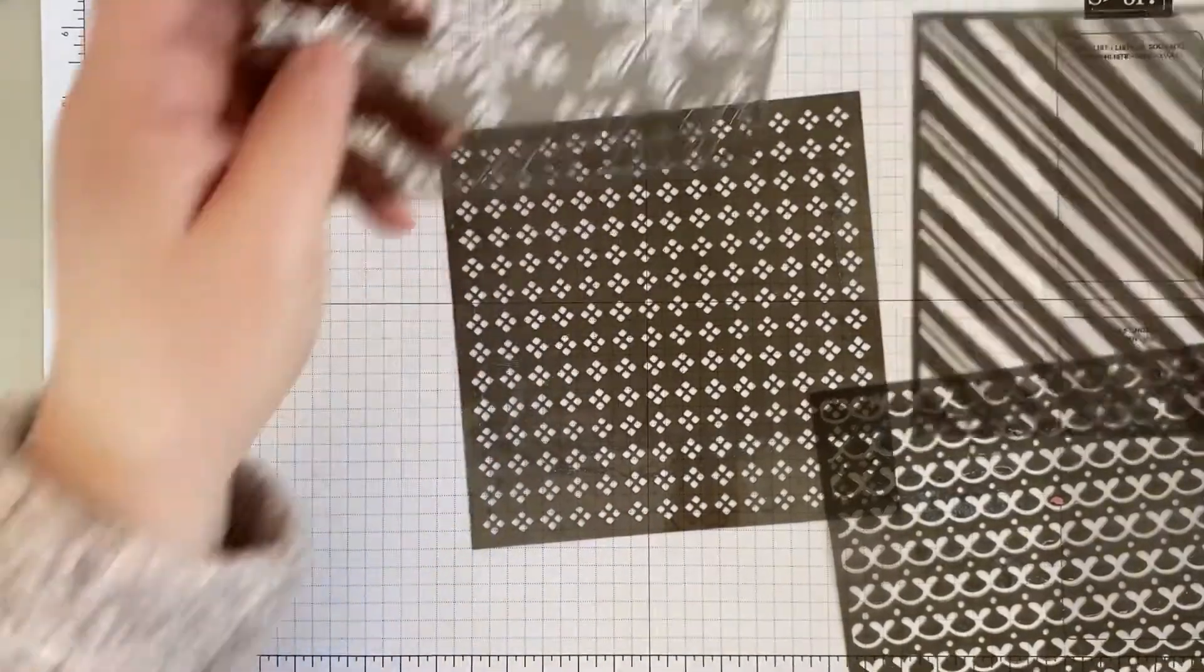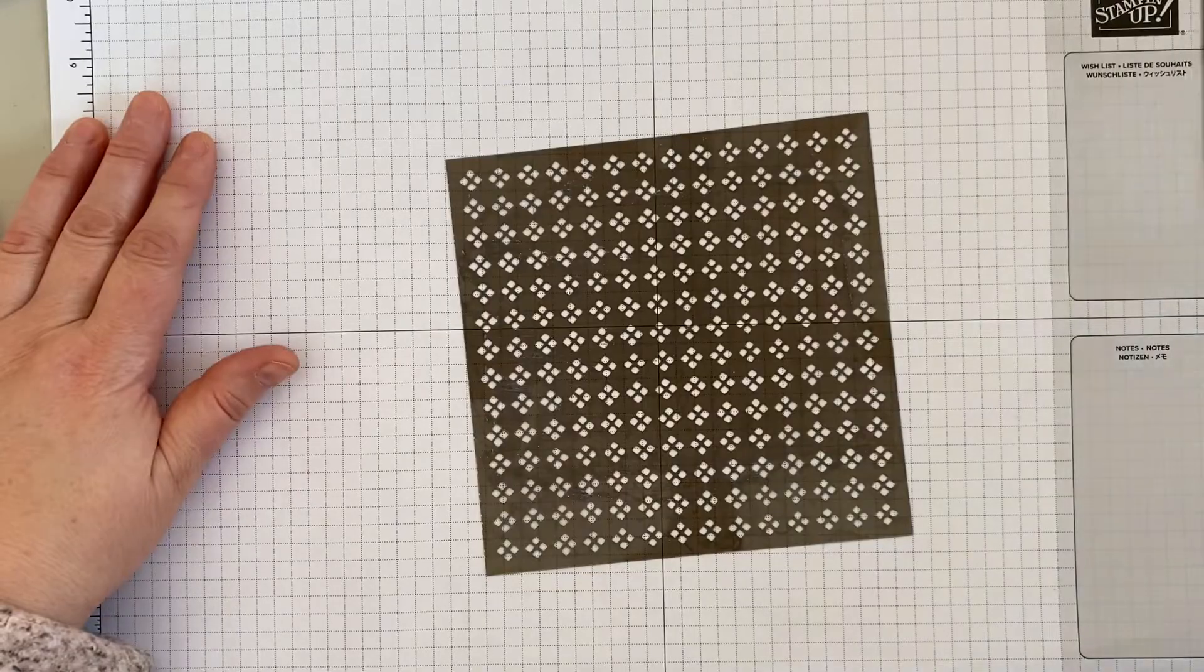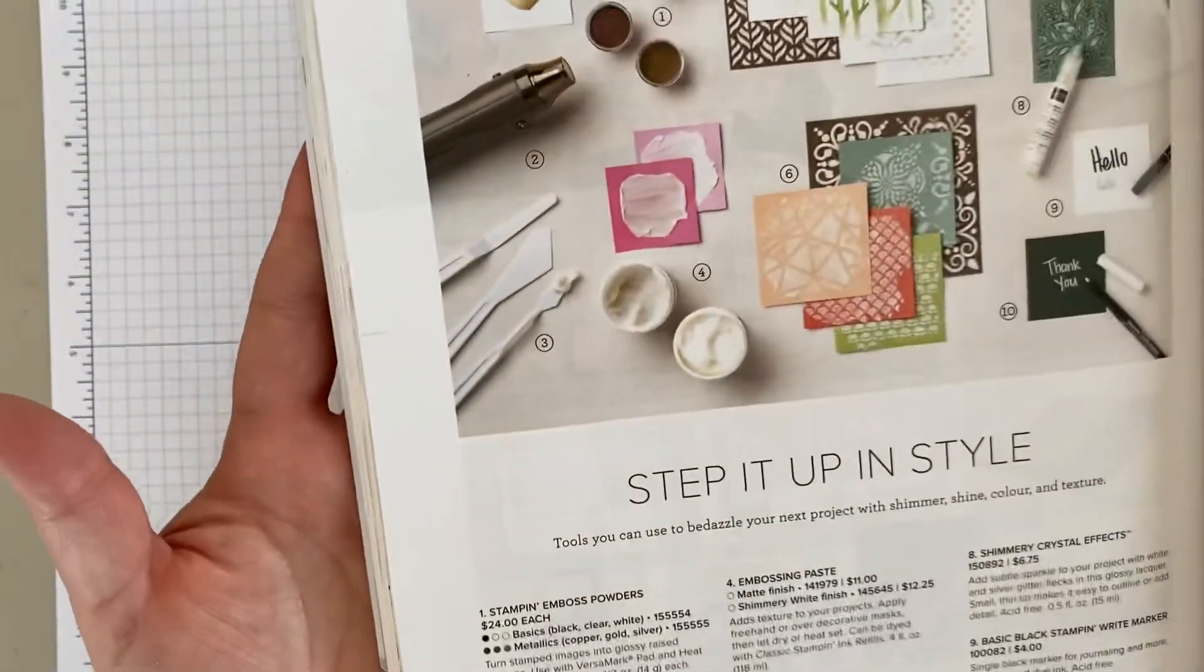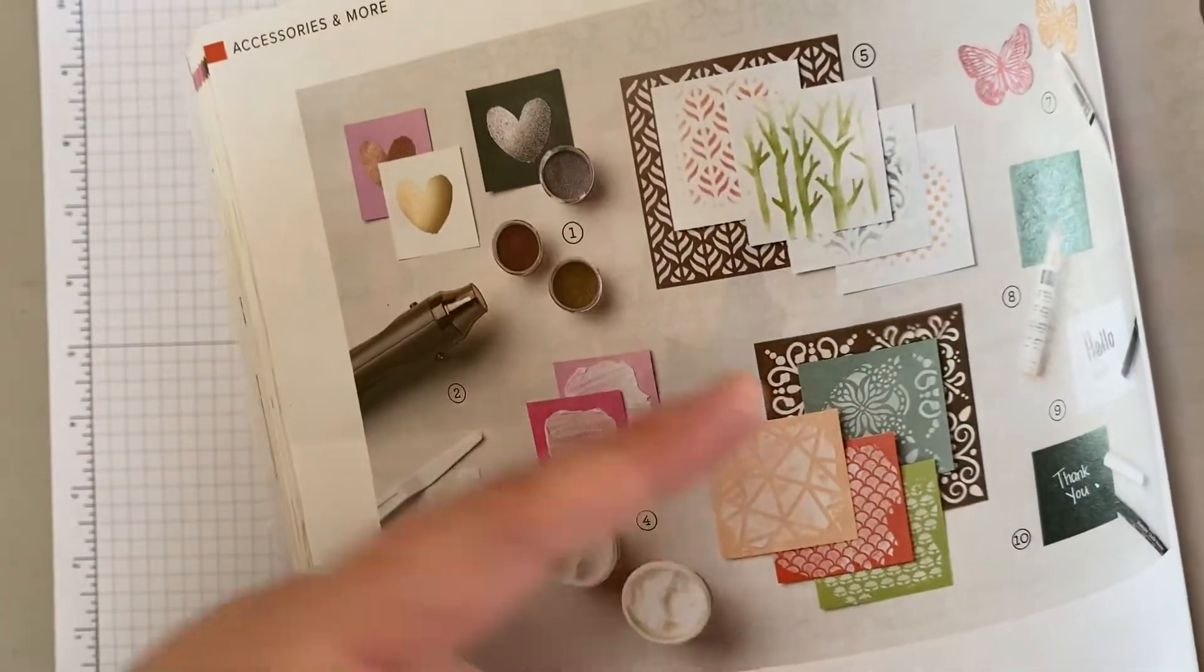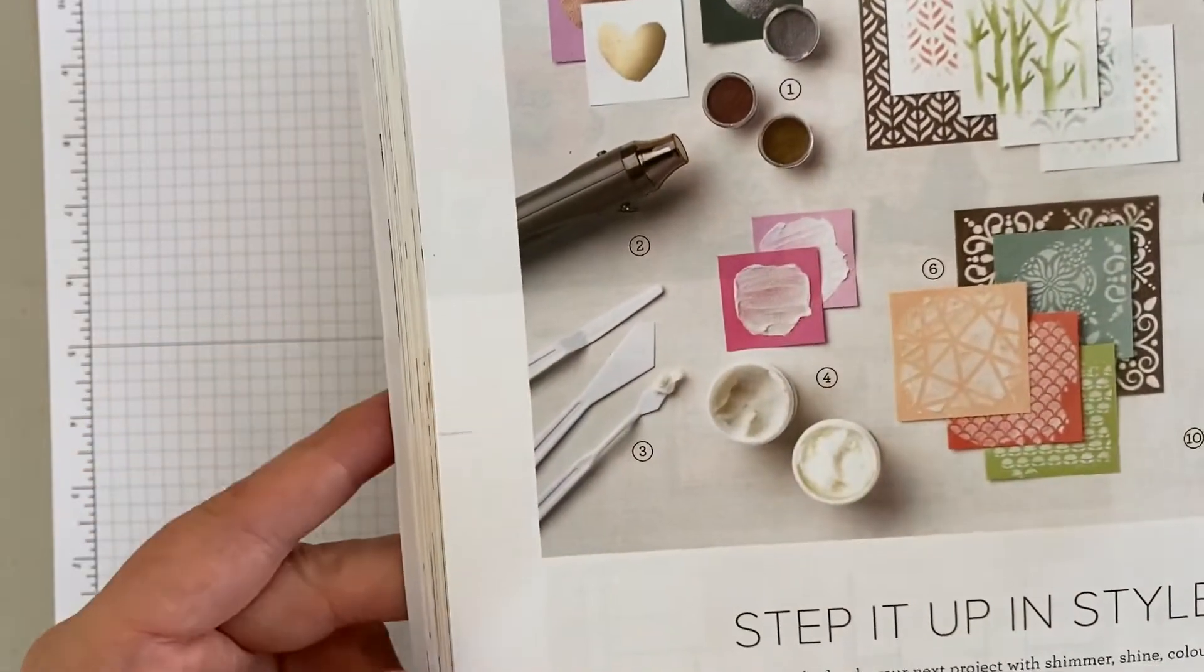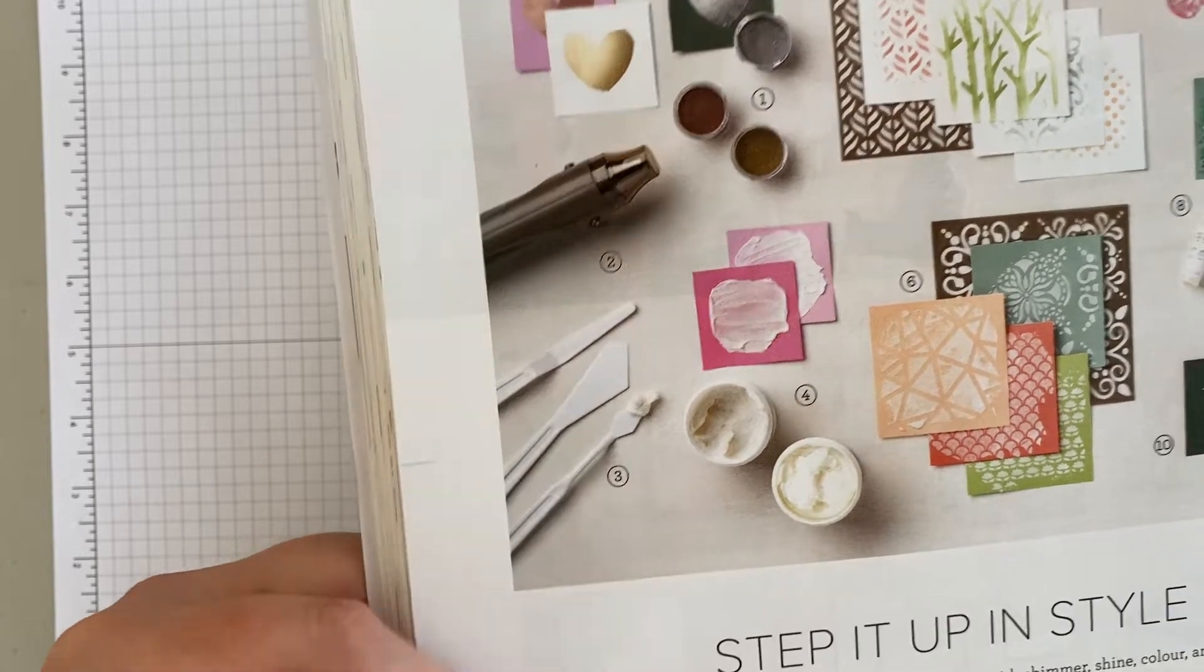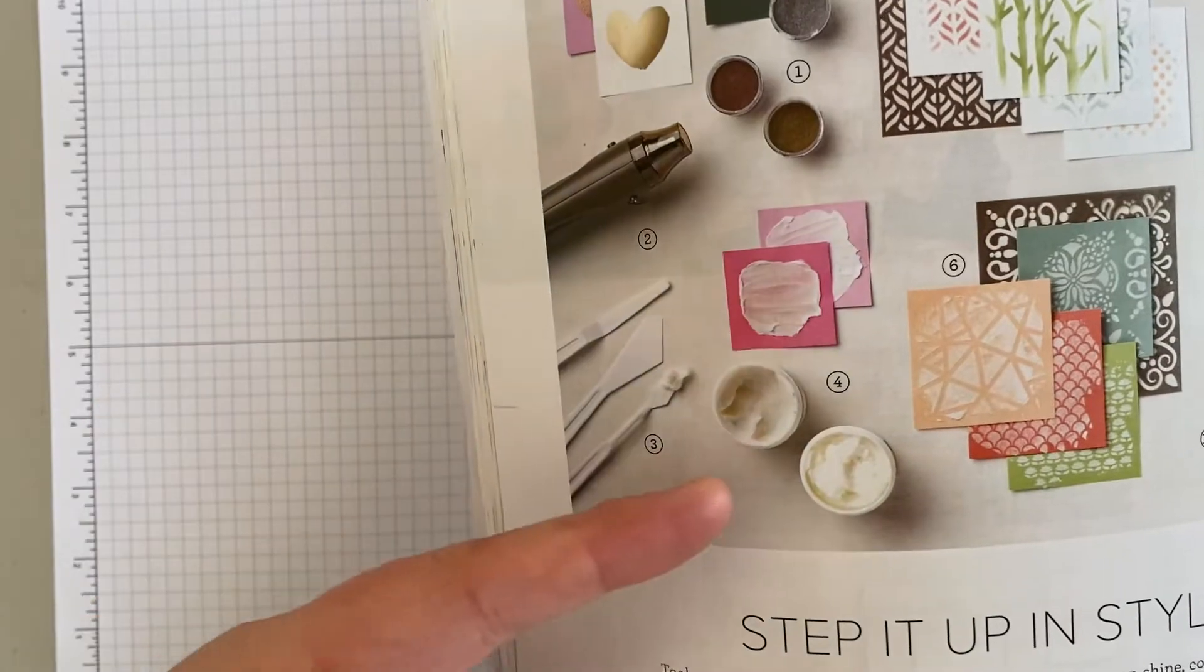Today we're going to be using it with some embossing paste. The embossing paste can be found in the annual catalog on page 128. You'll see the paste here and there are different mask designs that you can choose from, and then you've got the palette knives there, a three-pack for $6.75. The embossing paste comes in a matte finish or a shimmery white finish.